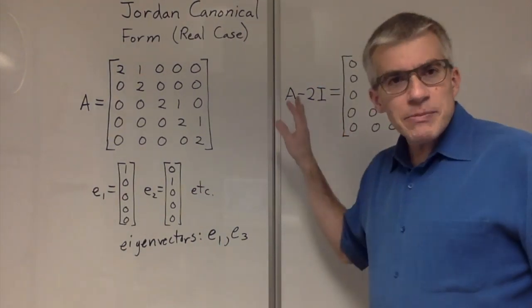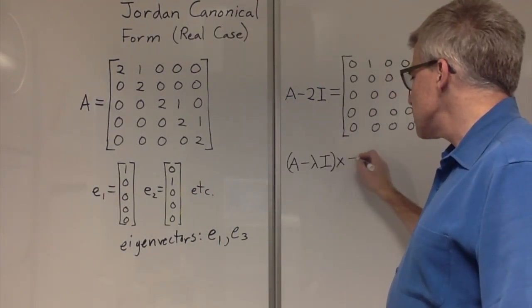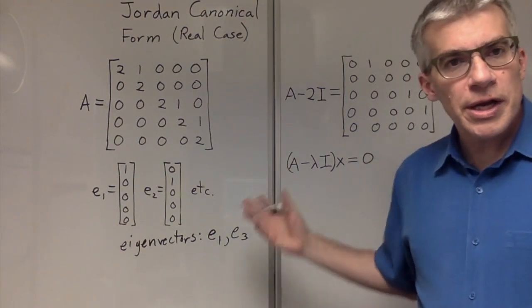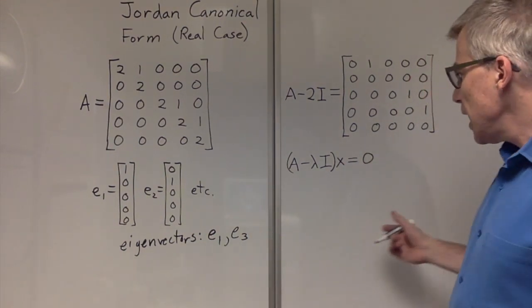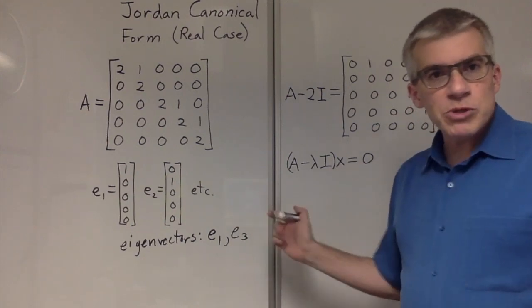A minus lambda I times X equals 0 for an eigenvector. And we need more vectors than will satisfy this.